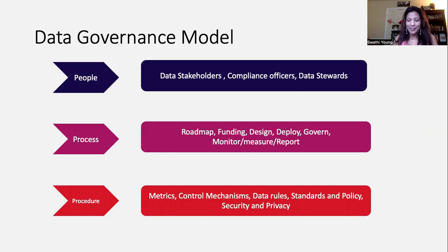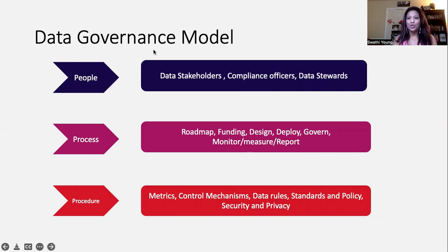What are some control mechanisms? We already spoke about access control. There can be additional controls like who could archive the data, who could delete the data, etc. And some of the data rules, standards, and policies. Last but not the least, security and privacy are super important. Hopefully this gives you an overview of what a data governance model looks like. Good luck with your data journey.